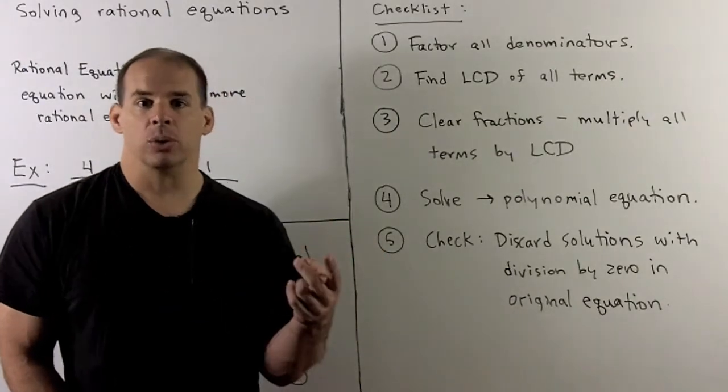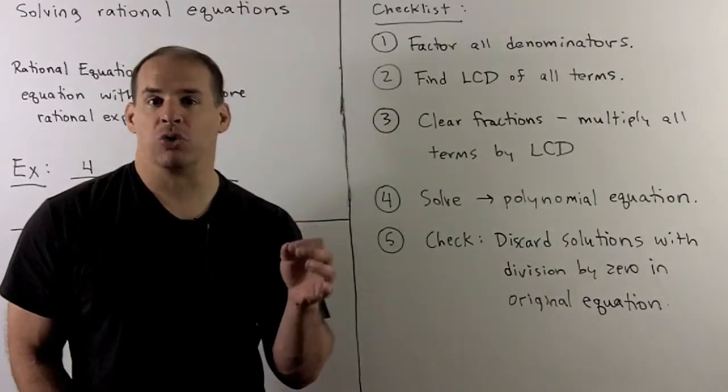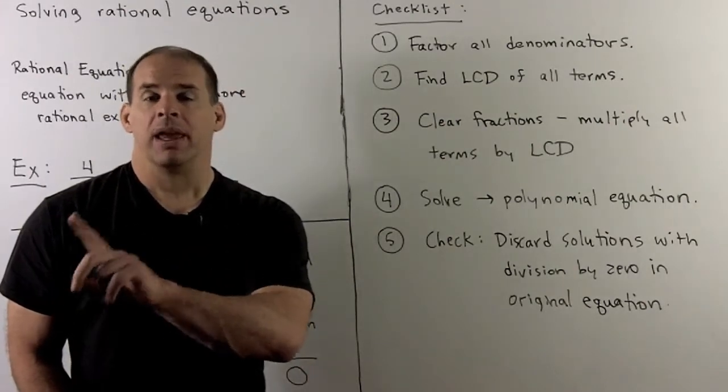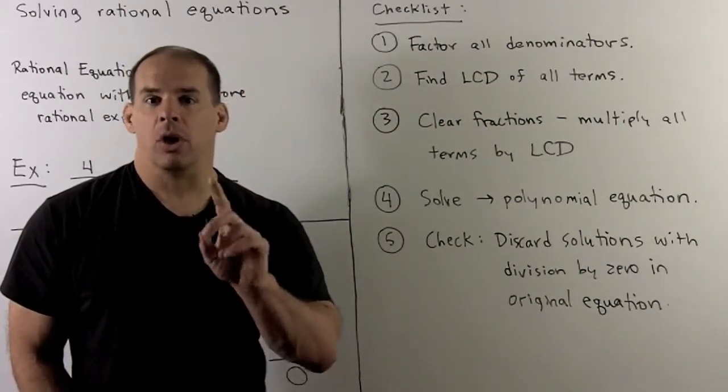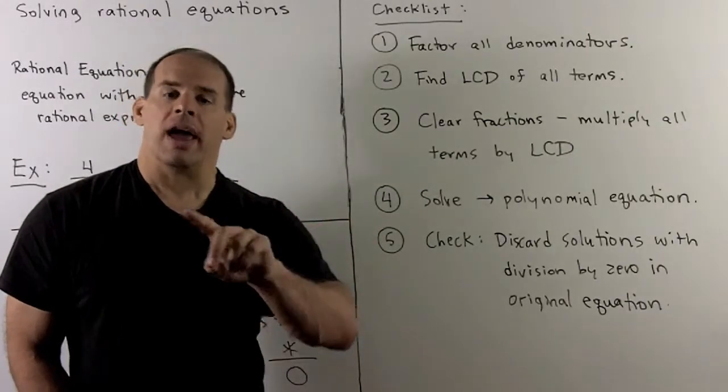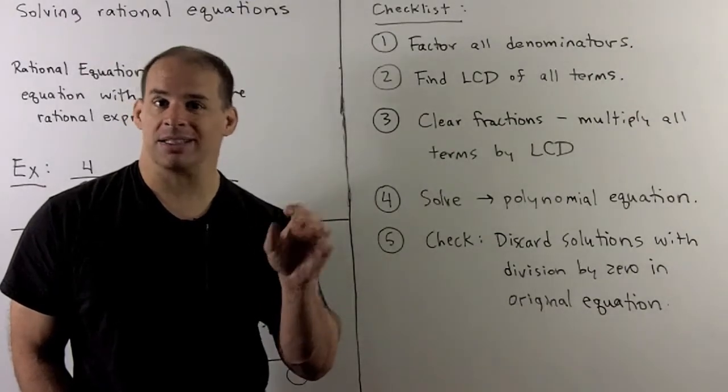That'll give me a list of solutions. We take those solutions, put them back into the original rational equation. That checks our work, and if we divide by zero, we know that we can't use that solution, so we throw it away. Every solution that comes out of a rational equation needs to be checked. It's not optional.